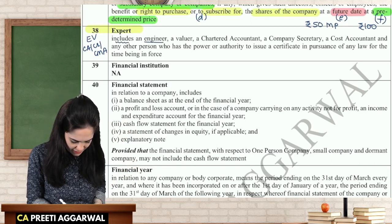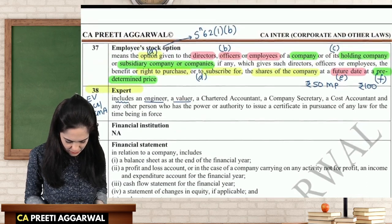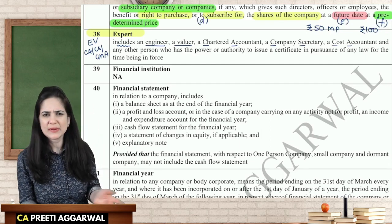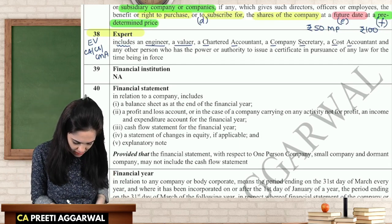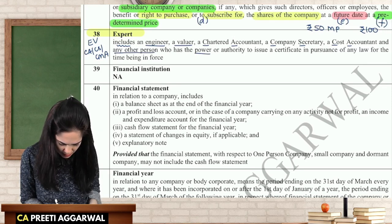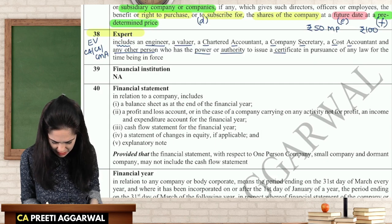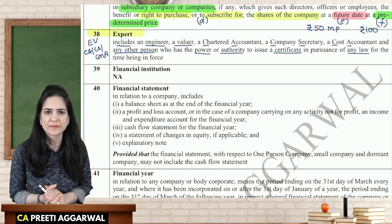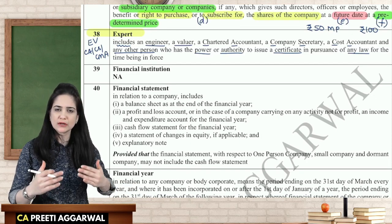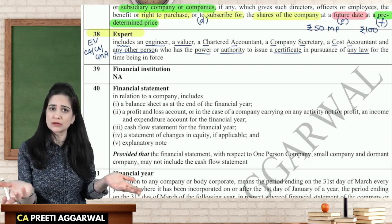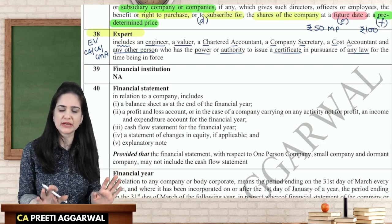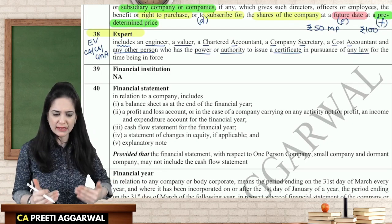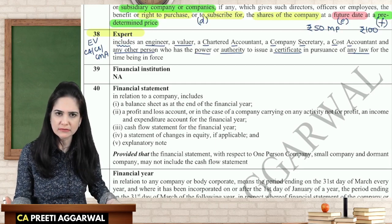The definition includes engineer, valuer, chartered accountant, company secretary, and cost and management accountant. It also includes any other person who has the power or authority to issue a certificate in pursuance of any law for the time being in force. For example, an architect or a doctor — if the law gives them authority to issue a certificate, they are an expert.